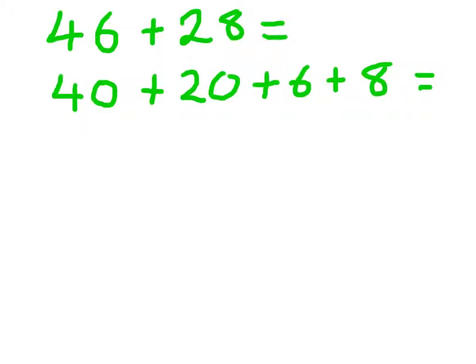So I know 40 plus 20 is 60. 6 plus 8 is 14. So 60 plus 14 equals 74. So that's a really quick method of adding two-digit numbers.